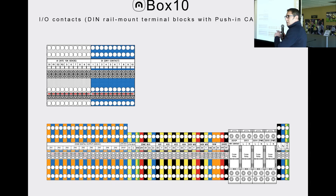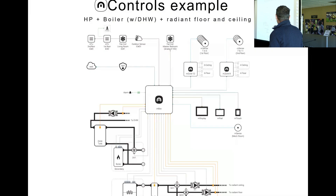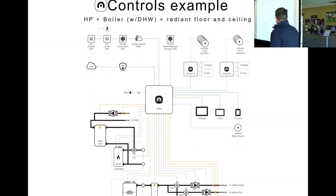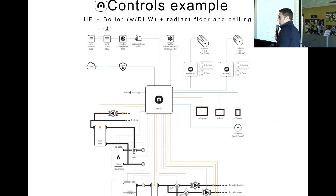Power relay to directly power your recirculation pumps. Here is an example of a control system, and like I was saying before, here we have two different mix stations — one for the radiant ceiling and one for the radiant floor.